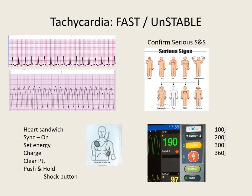As a review of fast and unstable: if they are fast over 150 beats, it doesn't matter if they are narrow or wide. If they have a serious sign and symptom, they need immediate synchronized cardioversion. Remember the steps — making that heart sandwich, hitting that sync button, setting your energy level: first sync at 100, second at 200, third at 300, fourth at 360. Charge, clear the patient, and push and hold so that electrical discharge is on that R-wave.